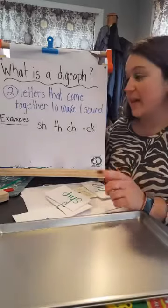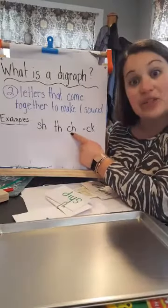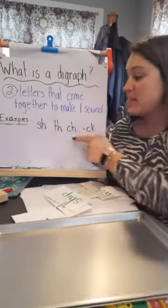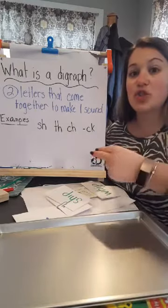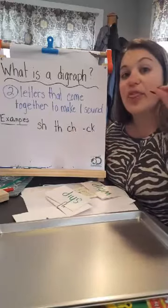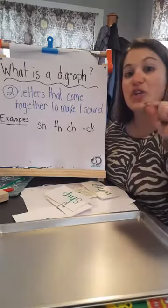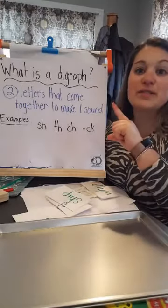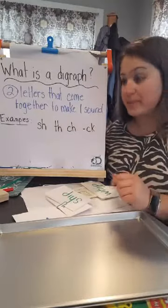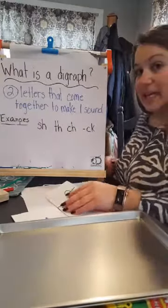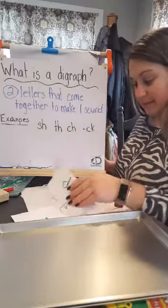So some examples of digraphs are SH, TH, CH, and CK. The signs for these are as so. SH, SH. What does SH say? SH. Good. TH. TH says. CH. CH. CH. And CK. K. K. K. Good job. You practice them. SH says. TH. TH. CH. And CK. Good job.